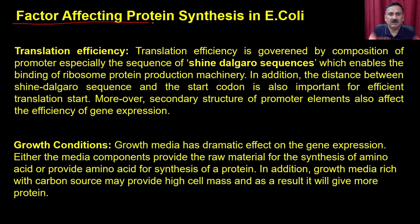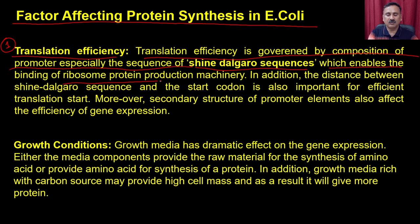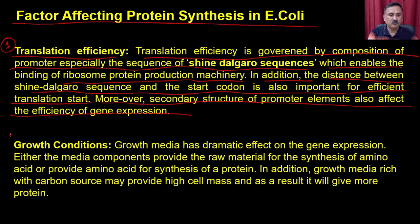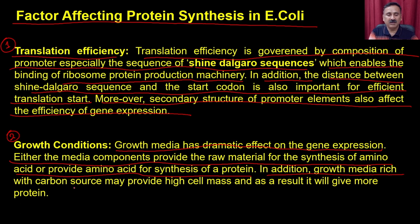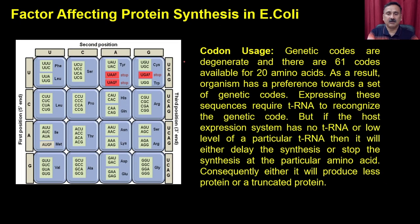There are many factors which decide protein production in the E. coli expression system. The first factor is translational efficiency, which is governed by the composition of the promoter, especially the sequence of the Shine-Dalgarno sequence, which enables the binding of the ribosome protein production machinery. The distance between the Shine-Dalgarno sequence and the start codon is also important for efficient translation. Moreover, secondary structure of the promoter elements also affects the efficiency of gene expression. The second factor is growth conditions — growth media has a drastic effect on protein production, either providing raw material for amino acid synthesis or directly providing amino acids, and media rich with carbon source may provide high cell mass and more protein.